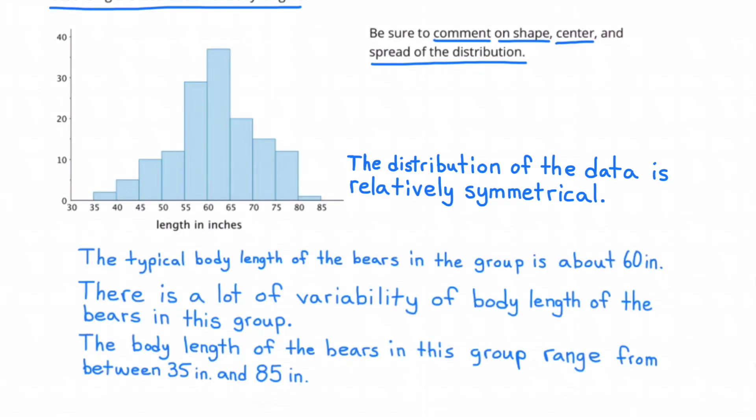The distribution of the data is relatively symmetrical. The typical body length of the bears in the group is about 60 inches. There is a lot of variability of body length of the bears in this group. The length of the bears in this group ranges from between 35 inches and 85 inches.